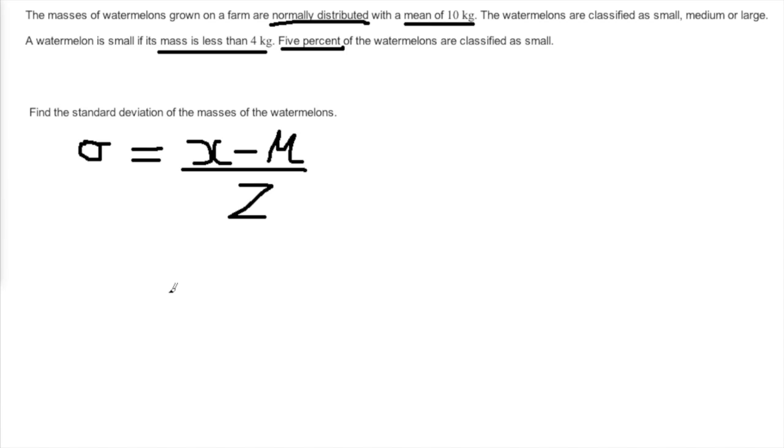As you can see here, the equation is standard deviation equals x minus mean over z-score, or the other way round: z equals x minus mean over standard deviation. Now let's take a look at the question and see what we can put into the equation.